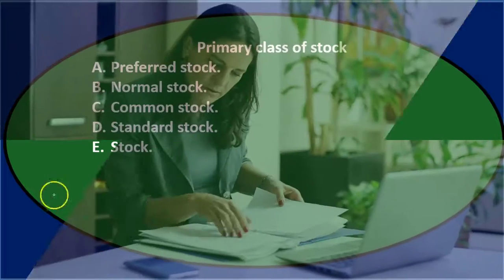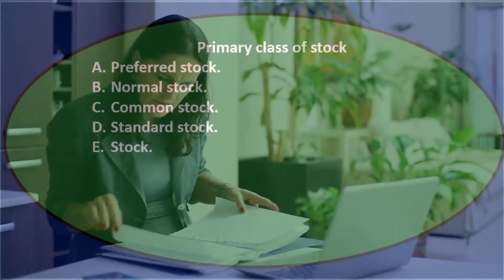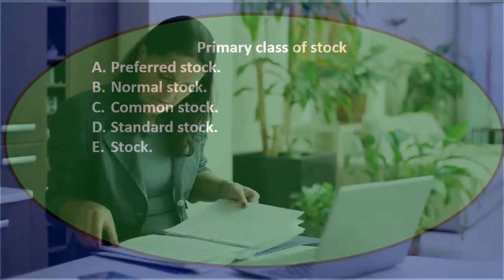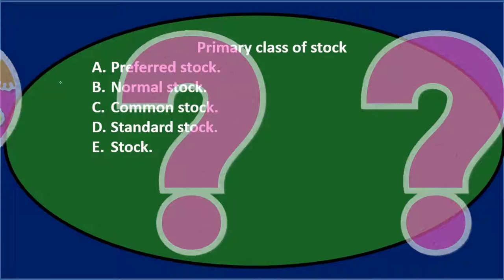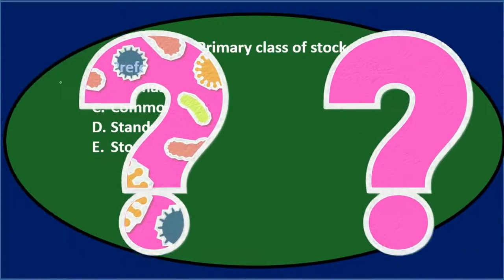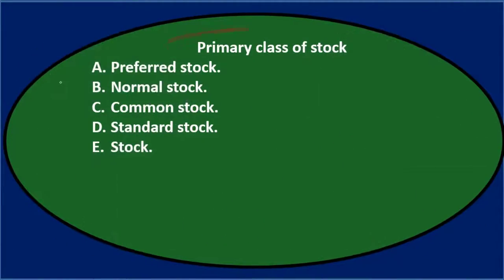Let's go through this again. We're going to use the process of elimination, see if we can eliminate some of these options and narrow them down. Primary class of stock — thinking about what's the most normal share of stock, what's the primary stockholders share if we buy stock in a corporation.